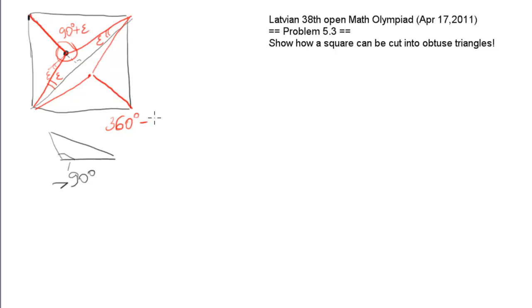360 minus 2 times 90 plus epsilon, which is 180 minus 2 epsilon. So if epsilon is small enough, then this would also be bigger than 90 degrees, and we have three obtuse triangles, and also on the other side of the diagonal we have three obtuse triangles.